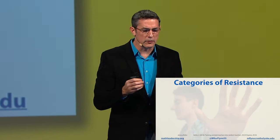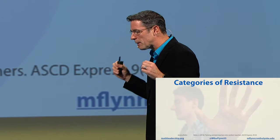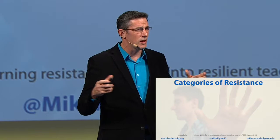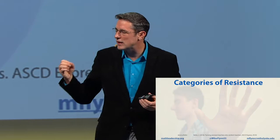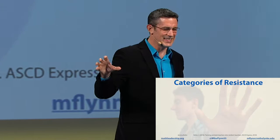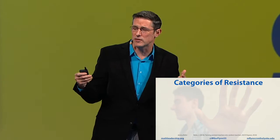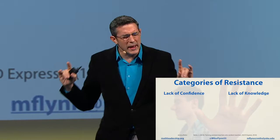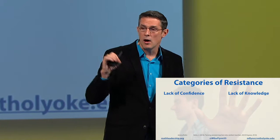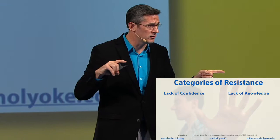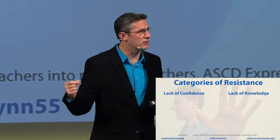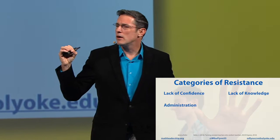Instead of just looking at those two categories, Jessica Bone wrote a great piece called 'Turning Resistant Teachers into Resilient Teachers' for ASCD, and she talks about the categories of resistance. When I'm working with coaches or anyone trying to navigate resistance, it's helpful to start thinking about the kinds of resistance we see and why it exists. Two of the main ones that come up together: teachers resist change out of a lack of confidence or a lack of knowledge. Sometimes a lack of knowledge causes the lack of confidence. Sam would fit in that category — lack of confidence was a big one for him.